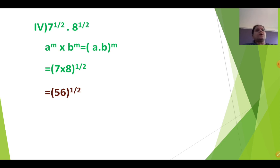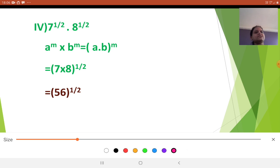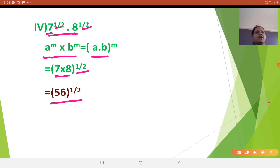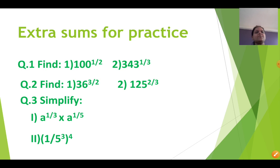The last question: 7 raised to 1 by 2 into 8 raised to 1 by 2. Here the index is the same — half and half — but the base is different. So which law? A raised to M into B raised to M equals A into B raised to M. Simply take 7 into 8 in bracket with the common index as half. 7 eights are 56, so 56 raised to half is your final answer. Hope all the questions are clear. I have given a few practice sums — try yourself, you will definitely get the answers.